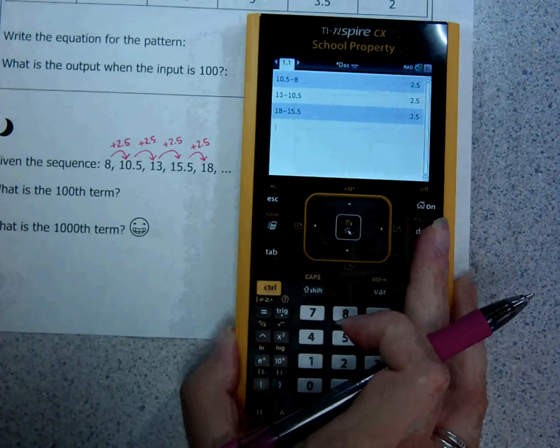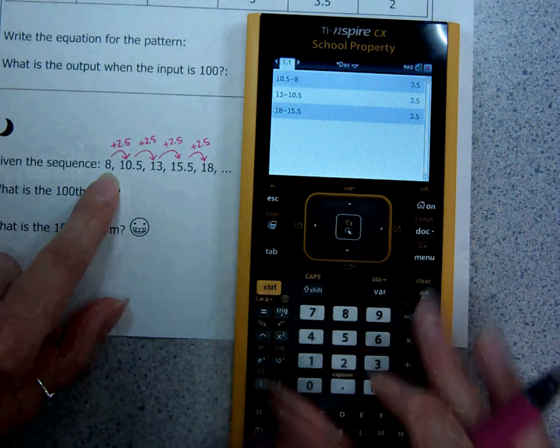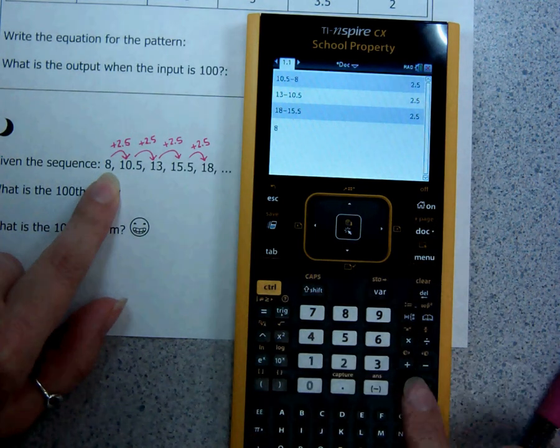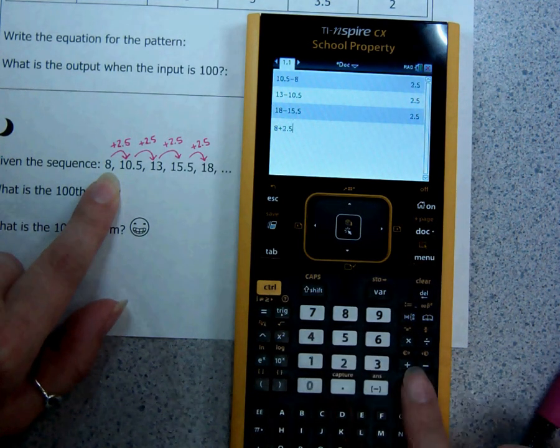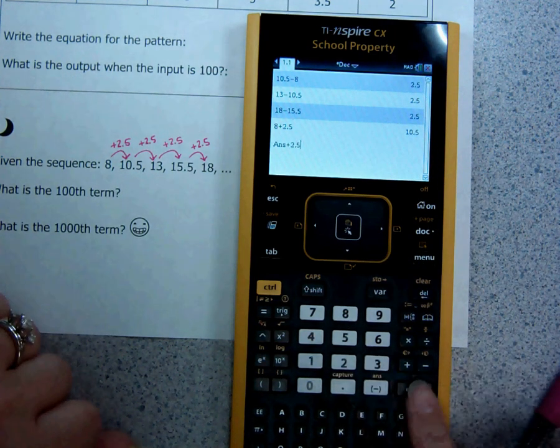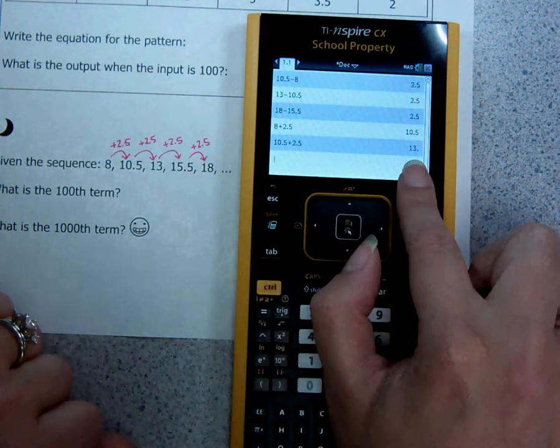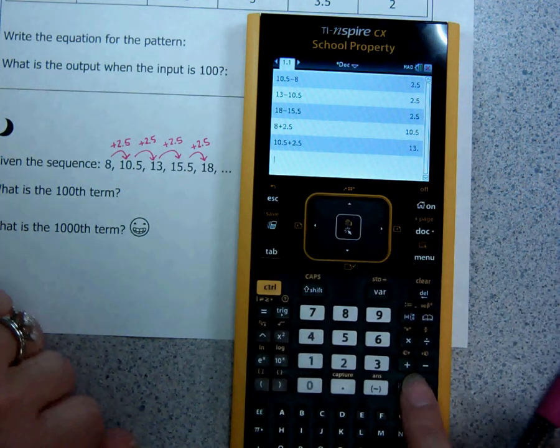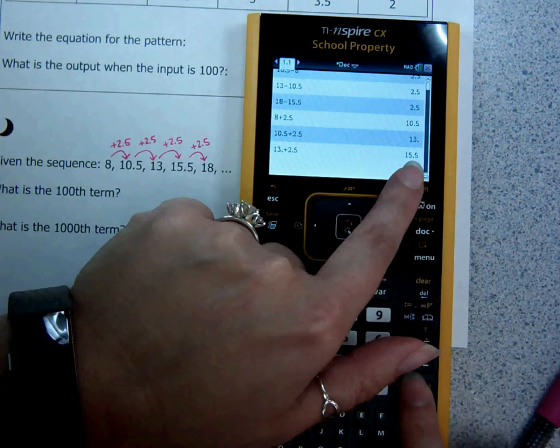Okay? So, to find the 100th term, I'm going to start with the first one, 8. And I'm going to add 2.5. So, that's term number 2. And I'm going to add 2.5. So, that's term number 3. And then, after you get to 3, you can just hit enter. So, there's term number 4.